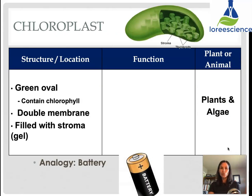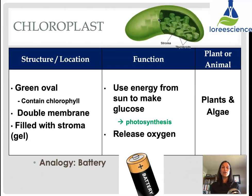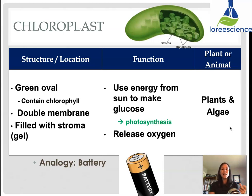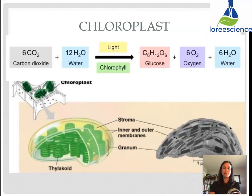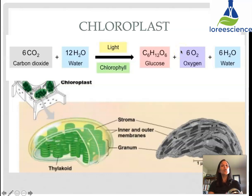Chloroplasts are a similar peanut or oval shape. They are generally green in color because they contain chlorophyll, which allows them to absorb sunlight energy. They also have a double membrane — smooth on the outside — and stacks known as thylakoids on the inside, filled with their own gel-like fluid known as stroma. The function of the chloroplast is to use energy from the sun to make glucose — we know that as photosynthesis — and in the process they release oxygen, which is one reason trees are so important to us. Chloroplasts are found in plants and algae. The analogy is like a battery: they create products that can be used to make energy. In photosynthesis, they take carbon dioxide and water, and using light and chlorophyll pigments, create glucose, oxygen, and water. The glucose and oxygen then go to the mitochondria to make energy.